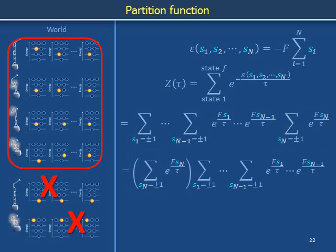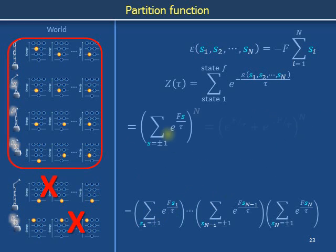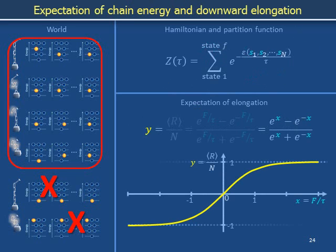Using the same algebraic manipulations used to set aside the sum over S sub N, we can isolate sums corresponding to the other variables as well. We end up with N factors of the same sum, with the index running over two states. This is the Nth power of the simple quantity e to the F over tau plus e to the minus F over tau. Now that we have written out the partition function, we will use it in the next video to calculate the average value of the energy of the system and the average downward elongation of the chain. When we say average, we mean averaged during the process in which the world explores its accessible configurations.